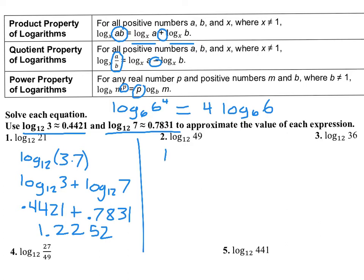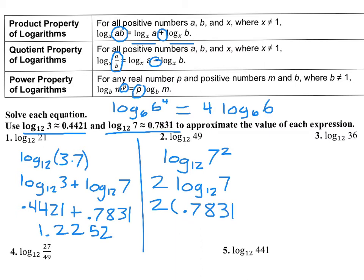For number 2, we can change 49 into 7 times 7, or we can write it as 7 squared. Now we can use the power property — by the power property I can move the 2 to the front, and now it's just 2 times 0.7831. Multiplying that by 2 gives 1.5662.